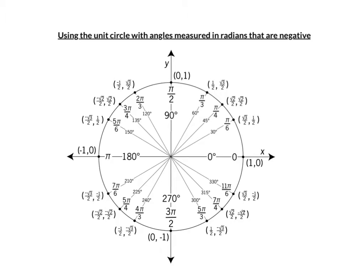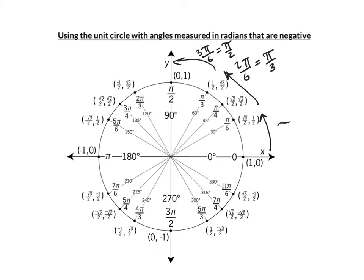If, for example, I want to count by pi over 6, notice that this is 1 pi over 6. And then if I go another 30 degrees, this is 2 pi over 6, which reduces to pi over 3. And if I go another 30 degrees, this is 3 pi over 6, which is pi over 2. So 1 pi over 6, 2 pi over 6, 3 pi over 6.